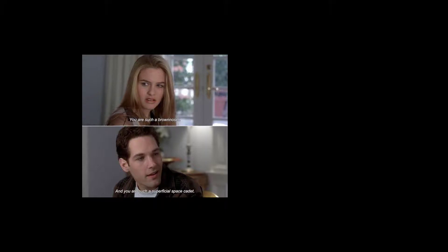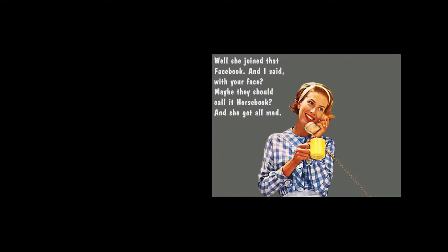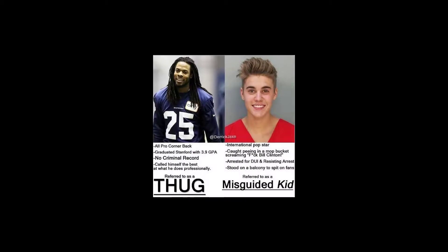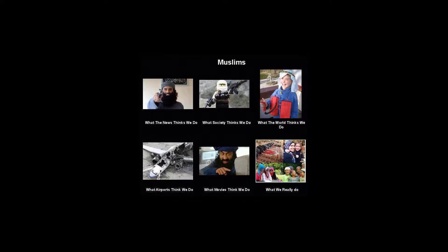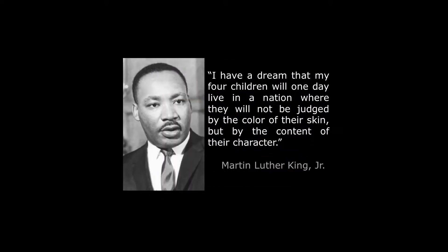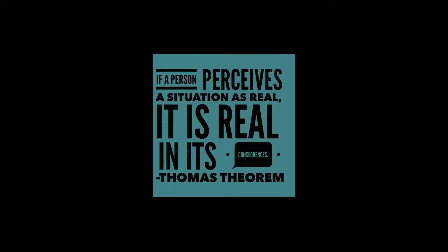Our interactions are determined by what other people mean to us. People symbolize things, and what people symbolize shapes who we think they are, and who we think they are shapes how we relate to them — thus the name symbolic interaction. When we see somebody, we size them up and make assumptions. This is called defining the situation. Once we have defined the situation, we act upon those assumptions, and once we act upon them, we make them real, even if our assumptions are incorrect. The Thomas theorem states that situations defined as real will be real in their consequences.